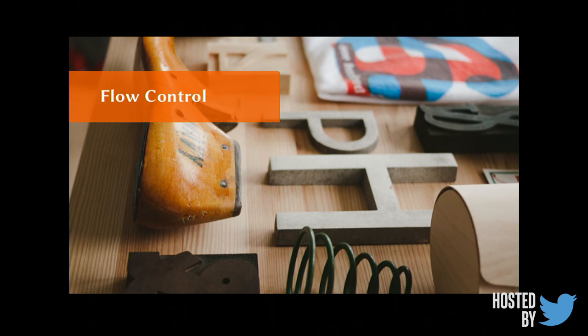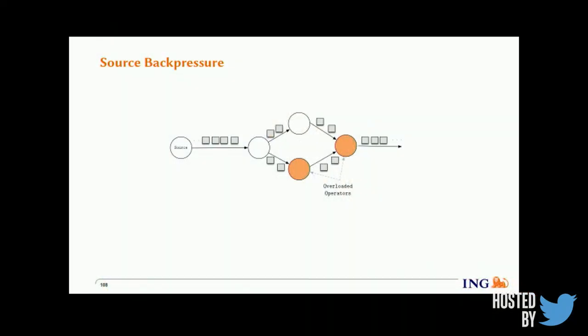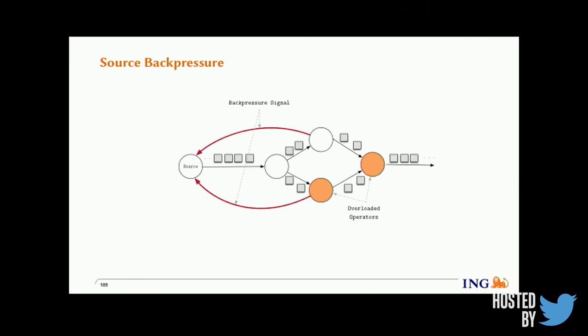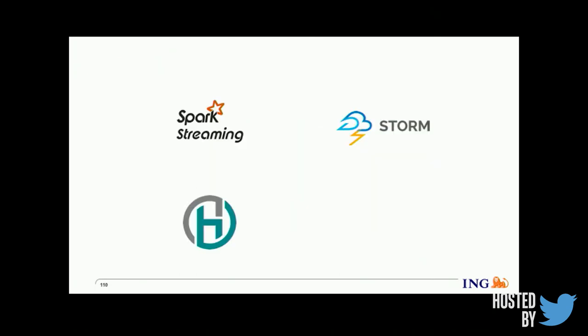Another important aspect is the flow control mechanism. It deals with the situation where an upstream node is faster than a downstream node — the upstream should not flood the downstream, as this might cause packet drops or memory exhaustion. There are two distinctive approaches. The first is source back pressure: the overloaded operator sends an overload signal back to the source. Spark Streaming, Heron, and Storm use this kind of back pressure.